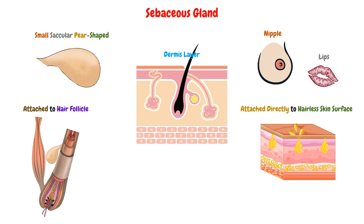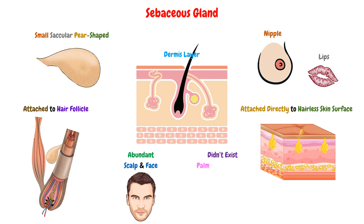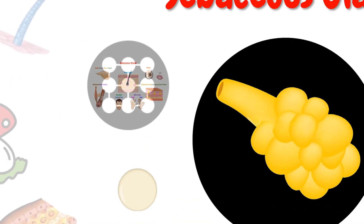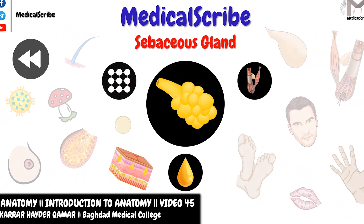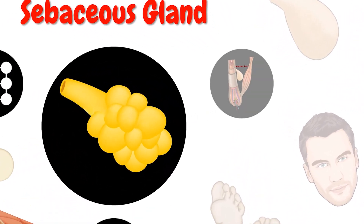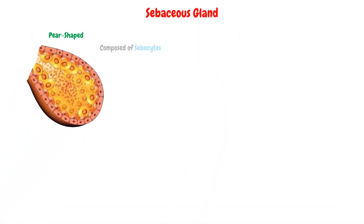These glands are abundant in the scalp and the face, while they do not exist in the palm of the hand and the soles of the feet. The sebaceous gland, as we said, is a pear-shaped structure composed of sebocytes.